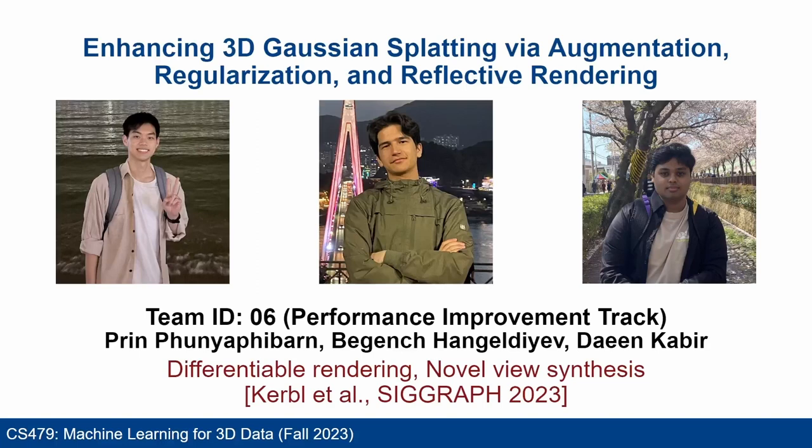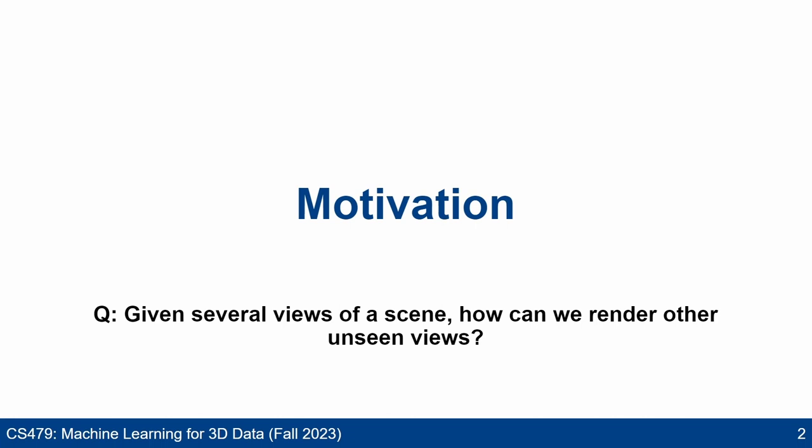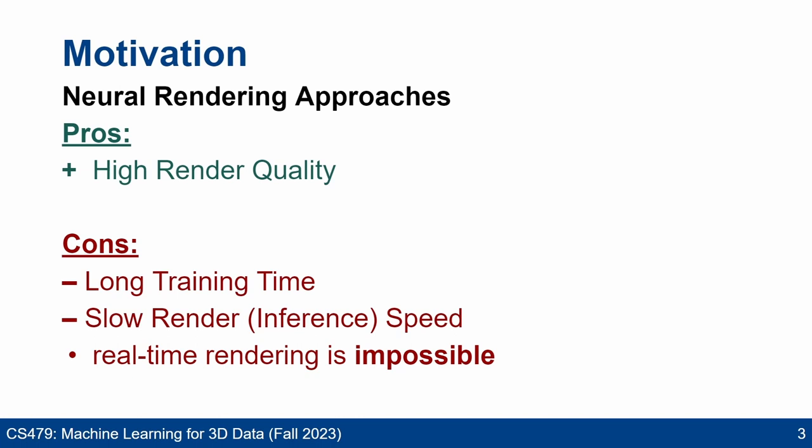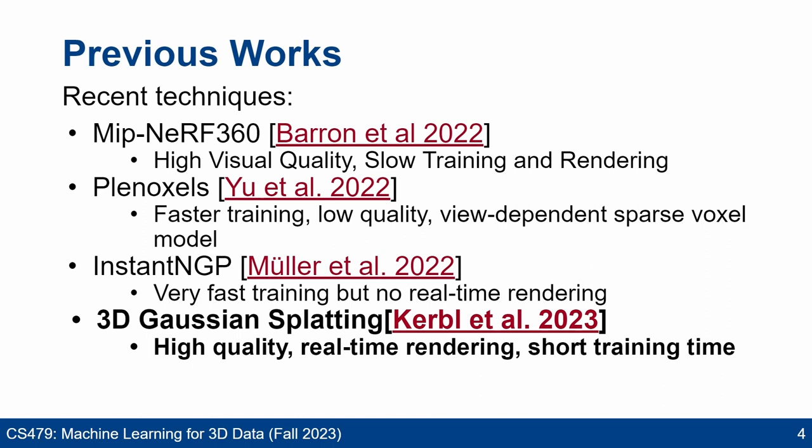A major question in rendering is: given several views of a scene, how can we render other unseen views? Neural rendering methods achieve high render quality but take very long to train and are slow at rendering. Some recent approaches achieve high-quality renders and fast training, but still cannot achieve real-time renders. However, a new approach called 3D Gaussian Splatting is the first to achieve high-quality, real-time rendering.